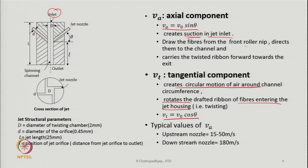Typical values of the axial velocity Va upstream of the nozzle are around 15 to 50 meters per second, and downstream the nozzle it is around 180 meters per second. These values will differ depending on air pressure, inclination angle, and diameter of the jet nozzles, all of which have some influence.